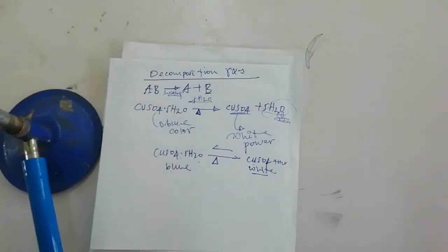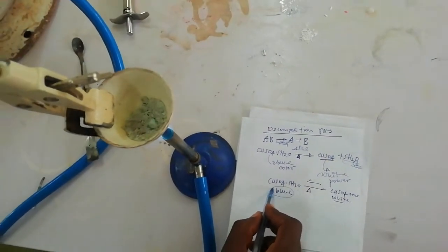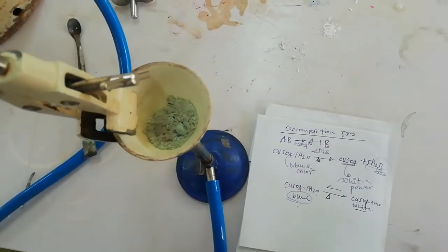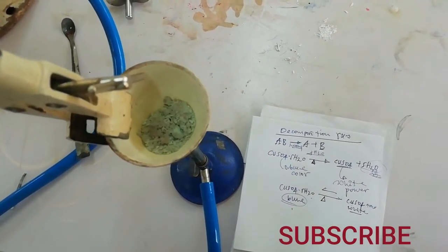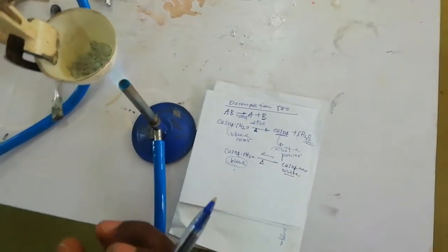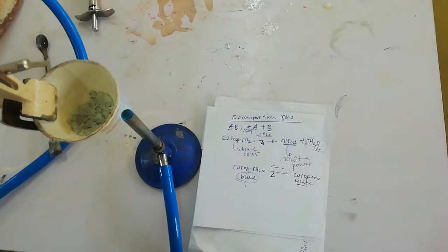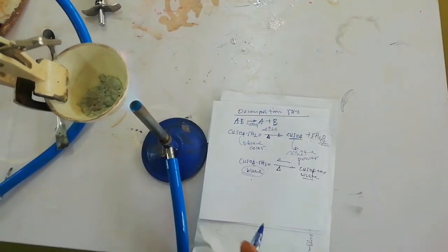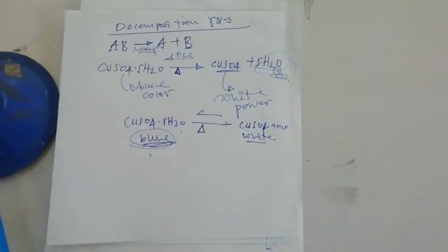If you add some amount of water into copper sulfate, we get copper sulfate pentahydrate, the blue one. Let us check whether this decomposition reaction of copper sulfate pentahydrate is a reversible reaction. Let us add some amount of water into this white powder to get back the blue crystal, which is copper sulfate pentahydrate.